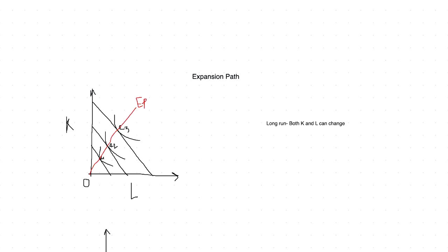This isocost line is tangent to this isoquant at point E1, giving us one combination of K and L. Another combination of K and L is given by E2, and a third by E3. These three are producer's equilibria, and if we join them, this path is known as the expansion path. This path shows that if a firm expands its output, how the combination of K and L is going to behave — it is a set of different producer's equilibria in the long run, representing different combinations of K and L as a firm expands its output.